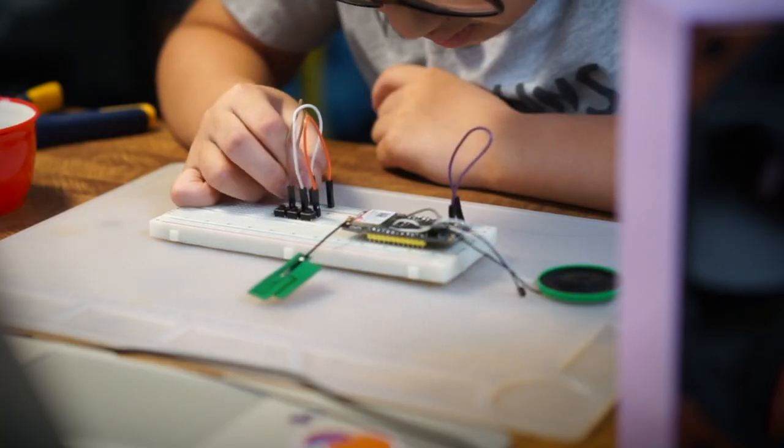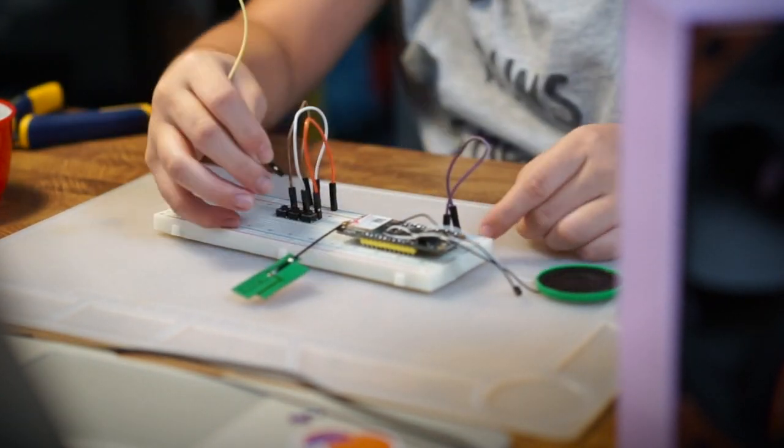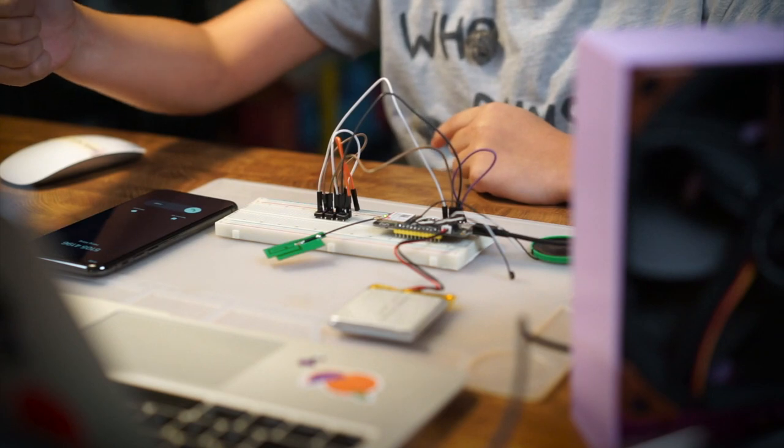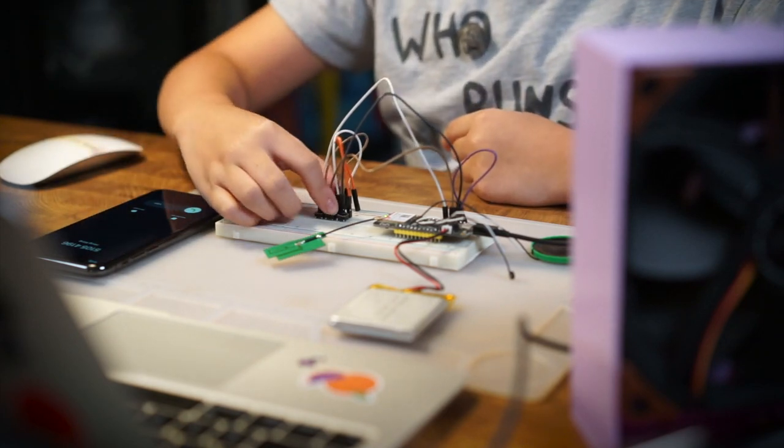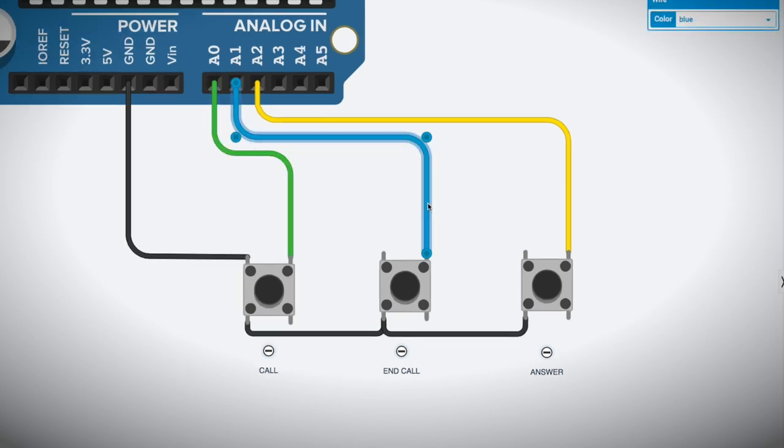Now, back to the build. Once that was done, it was time to make it a bit more functional with some buttons. It would be kinda weird to have to lug a computer around every time you wanted to make a call. The circuit for the buttons are pretty straightforward. There are three buttons, one to make a call, one to end a call, and one to answer a call. They are connected to the same negative lead, and each button will connect to an individual pin on the board. A0 for call, A1 for end a call, and A2 for answer.